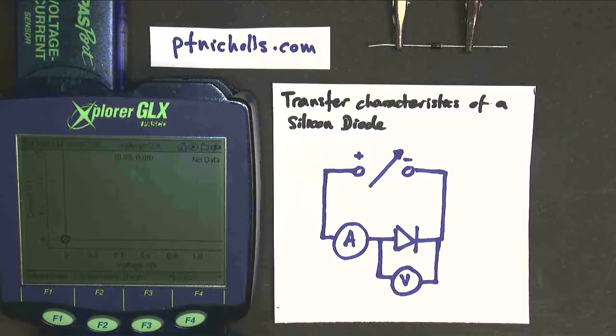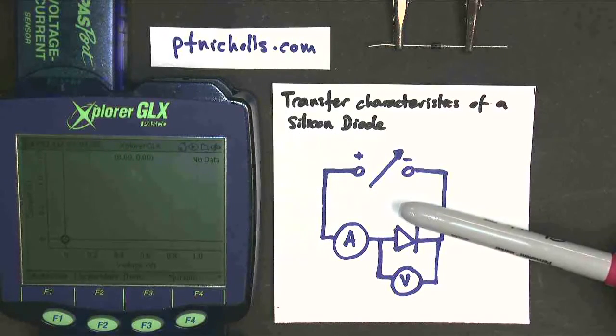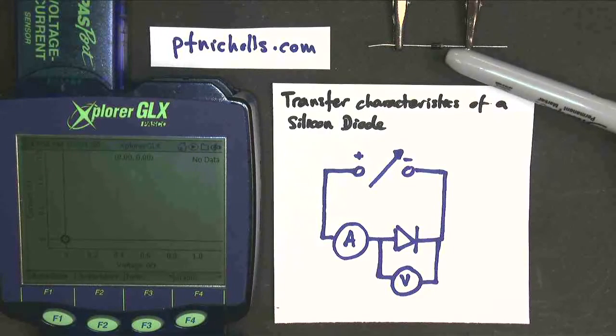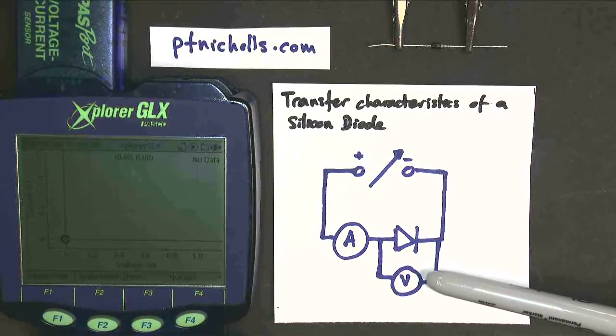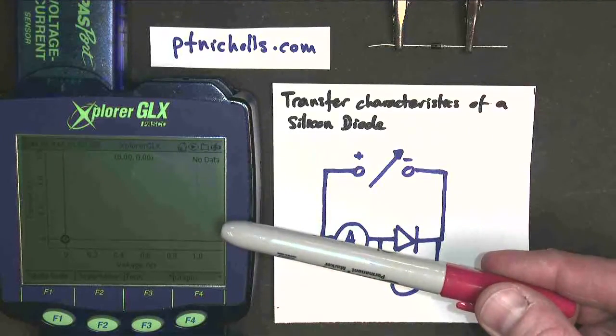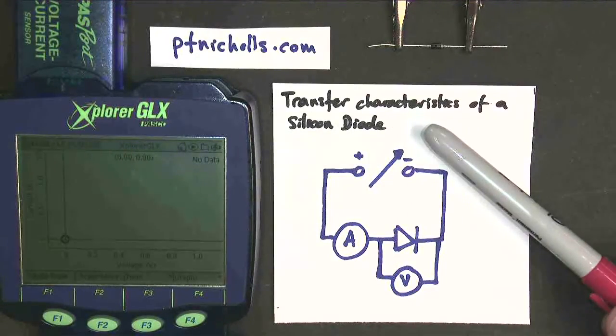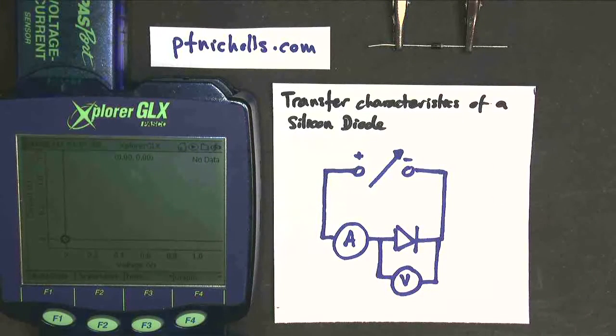This video is about diodes. I've built this circuit to test this diode so I can measure the current through the diode and the voltage across the diode and plot it on this graph using my data logger. This is called the transfer characteristic. Let's have a look and see what happens.